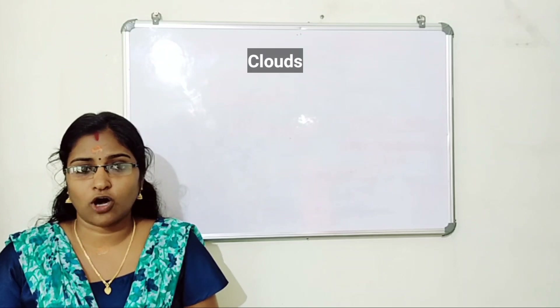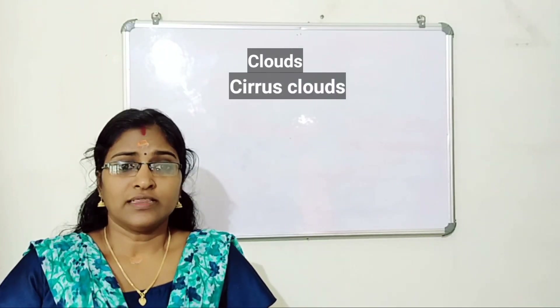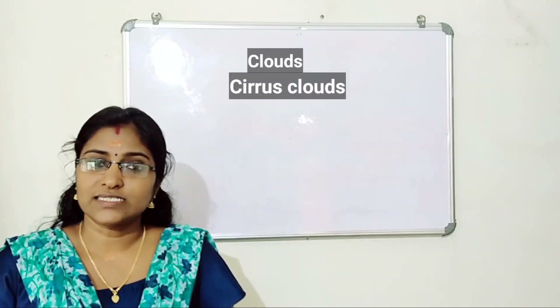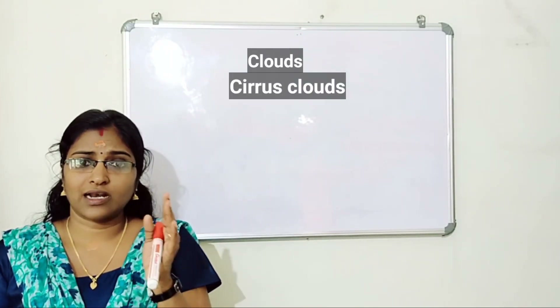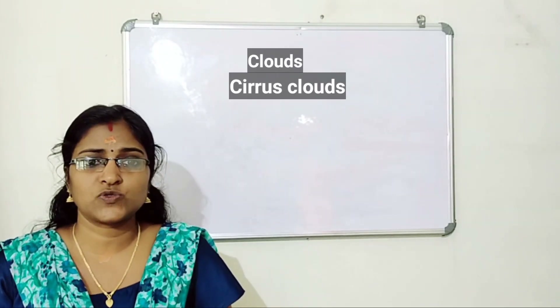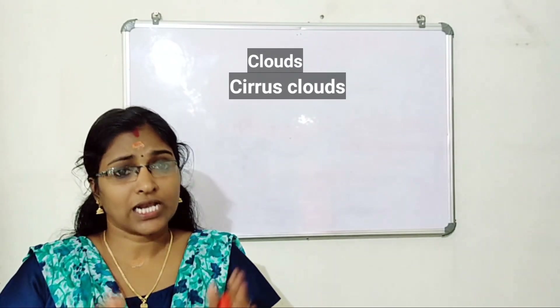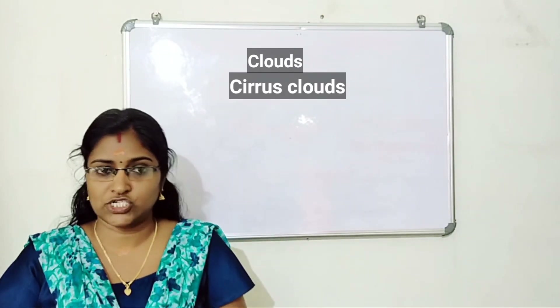First, cirrus clouds. What are cirrus clouds? They are feather-like clouds found in the upper atmosphere during clear weather situations.